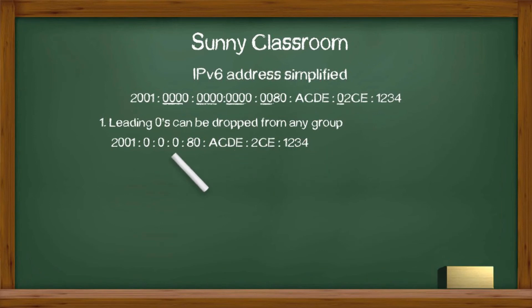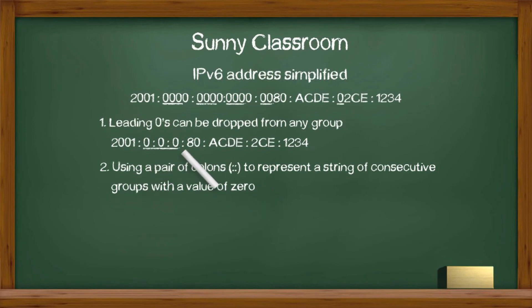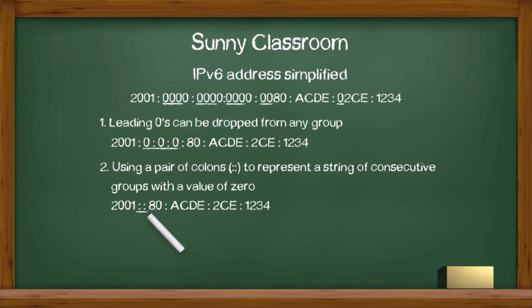Step 2: use a pair of colons to represent a string of consecutive groups with a value of 0. In the example above, groups 2, 3, and 4 are all zeros and they are next to each other. Thus, according to this step, we simplify those 3 zeros further into a pair of colons. The rest remains the same.